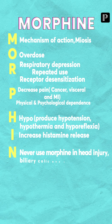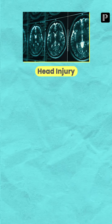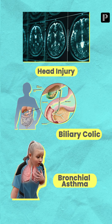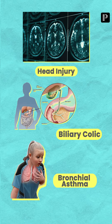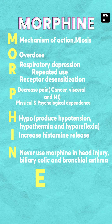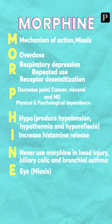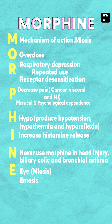The next letter is N — never use morphine in these conditions: number one, head injury; number two, biliary colic; and number three, bronchial asthma. The last letter is E — E stands for: it causes miosis; E for it can induce emesis; E for enteric system — it can cause constipation; and one more E for elimination — it undergoes glucuronide conjugation and renal elimination.